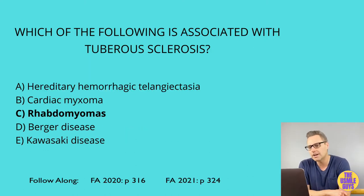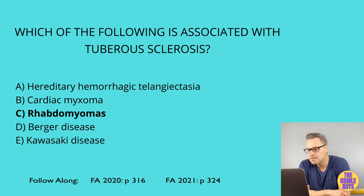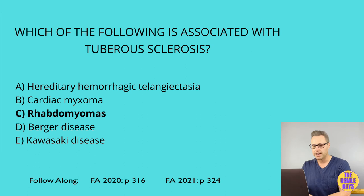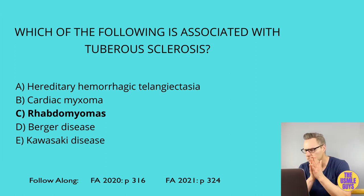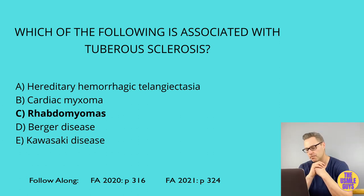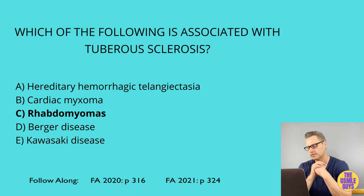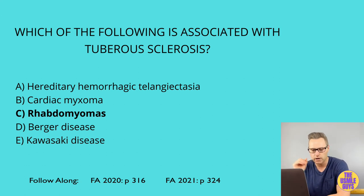The correct answer here is C. Let's take a look at the cardiac tumors. The correct answer was rhabdomyoma, which is the most common primary cardiac tumor in children, and it's associated with tuberous sclerosis. Hamartomatous growths are the characteristic histologic finding. Myxomas, on the other hand, are the most common primary cardiac tumor in adults. These are overwhelmingly likely to present in the left atrium. The typical description is a ball-valve obstruction in the left atrium, physically linked to syncopal episodes. Constitutional symptoms like fever and weight loss are IL-6 mediated. A unique auscultatory finding is an early diastolic plopping sound. Histologically, look for gelatinous material and myxoma cells immersed in glycosaminoglycans.